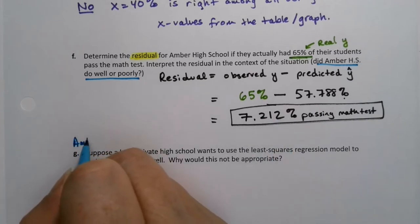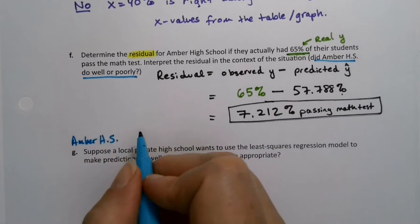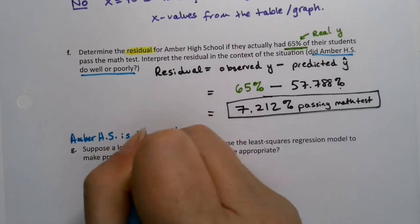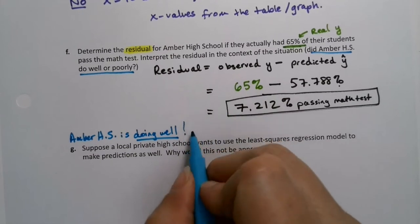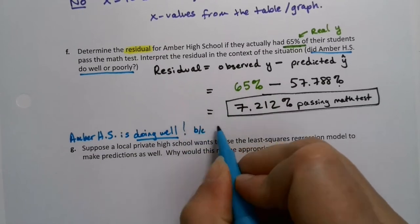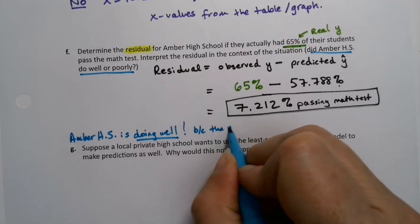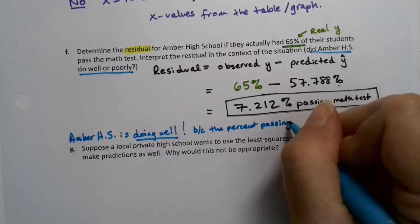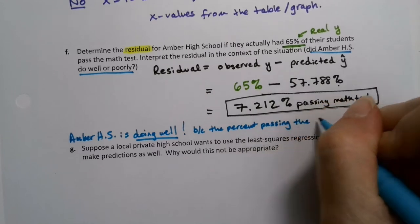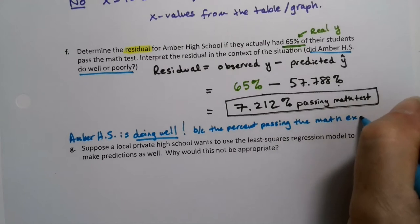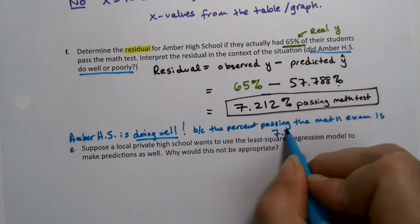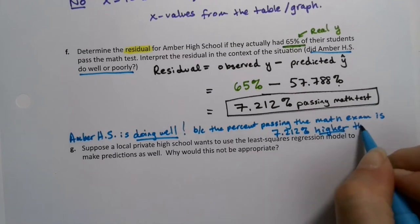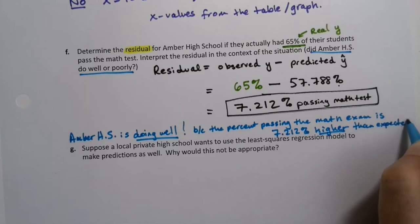And they're 7.212% higher than we would expect. So Amber High School is doing well for a made-up high school, right? Because the percent passing the math test is 7.212% higher than expected. So they're doing well.